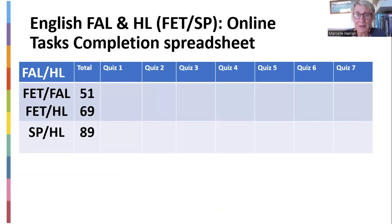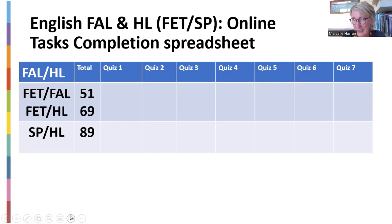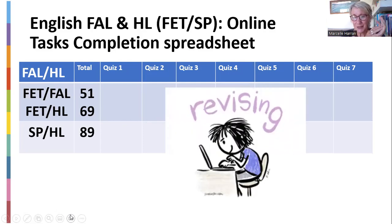Looking at my spreadsheet, you'll see quiz one through to quiz seven. Currently 51 FETs for first additional language have registered, 69 home language FETs, and 89 SPs. The quizzes — one through four — are not for marks; they're not for participation as previously. They are little online quizzes at the end of every week where you can see how much you remember of the lesson. It gives you an overview of what you're trying to cover that week. It's not for marks — it's more for you, just to check your understanding.